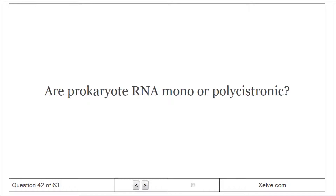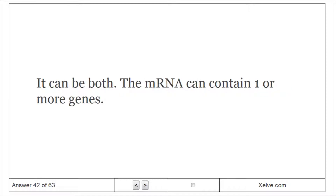Are prokaryote RNAs monocistronic or polycistronic? They can be both — the mRNA can contain one or more genes.